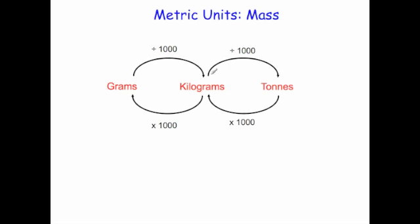To go from grams to kilograms, you divide by a thousand. For instance, one thousand grams is one kilogram. To convert between kilograms and tons, you also divide by a thousand. So one thousand kilograms is one ton.